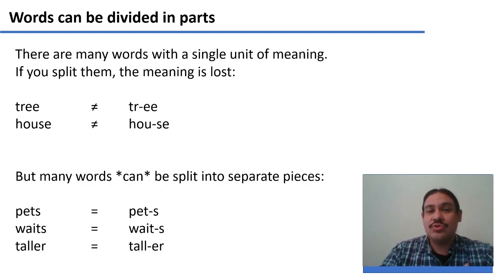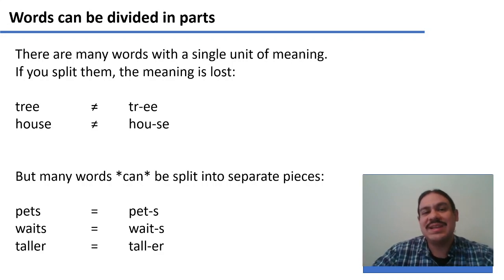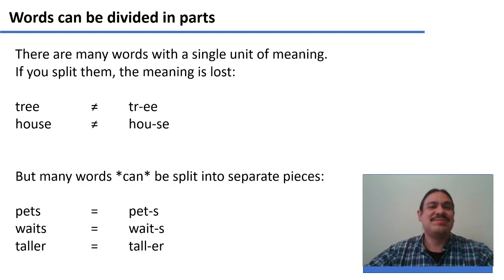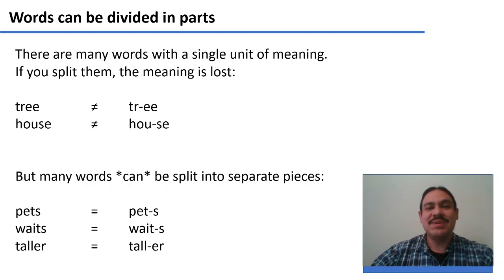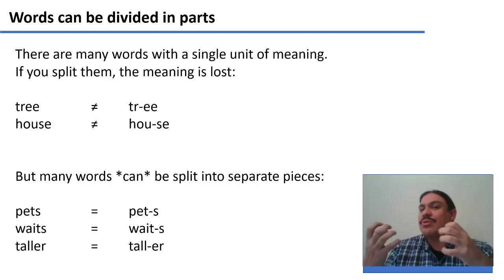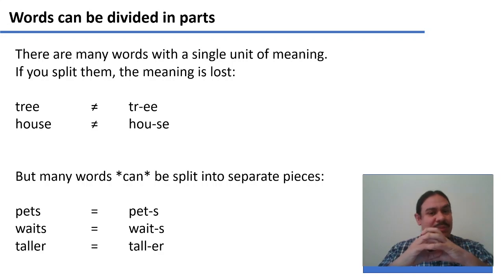For example, the word 'tree' just means the living being in the forest. If you split the word 'tree' it would cease to mean anything — neither part means 'tree' and the meaning is lost. Likewise, if you take the word 'house,' the place where you live, and split it, neither part means 'house.' So 'tree' and 'house' are each a single element with a single meaning.